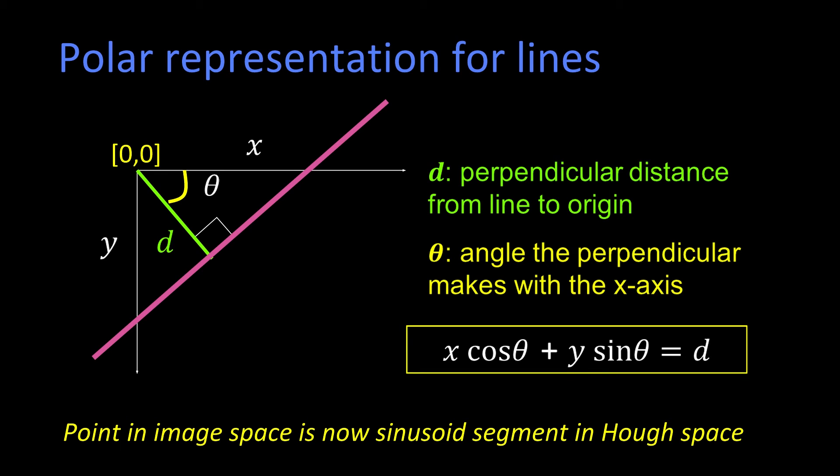One other comment about this—there's a redundancy or an ambiguity here. If d can only be positive, this line has to be able to spin all the way around, so theta would have to go from 0 to 2π, or 0 to 360 degrees.